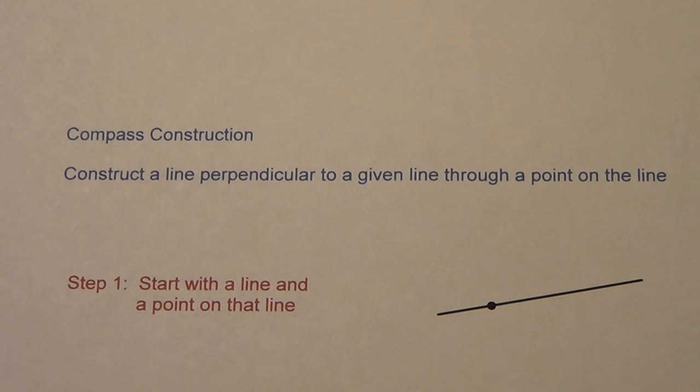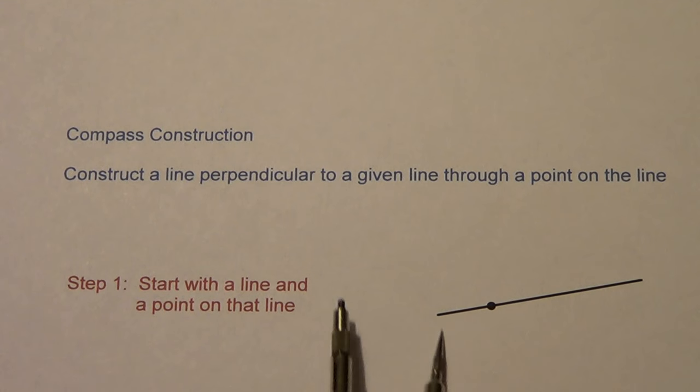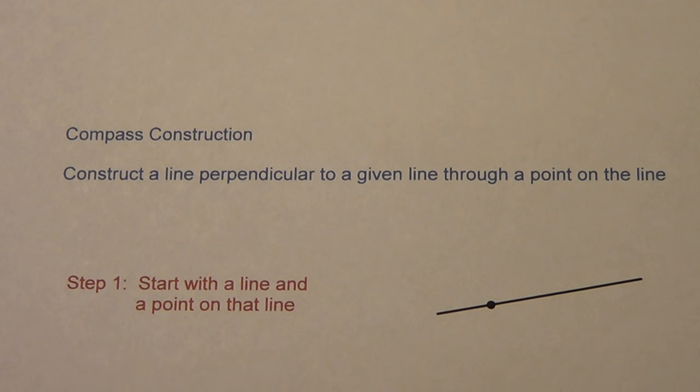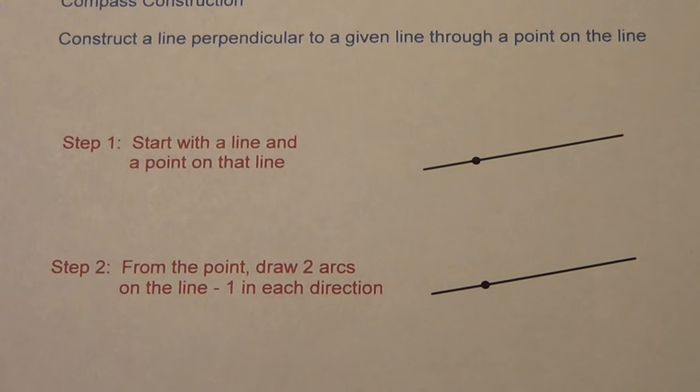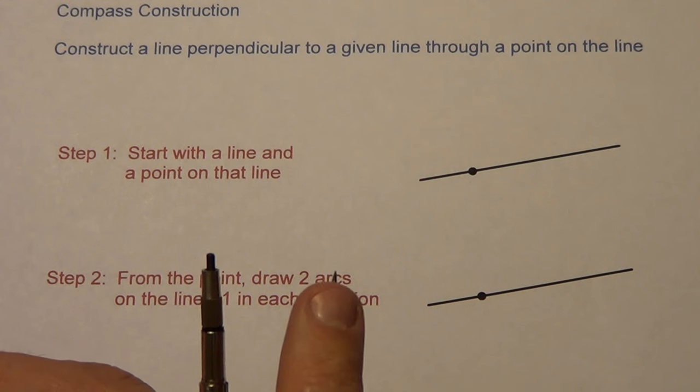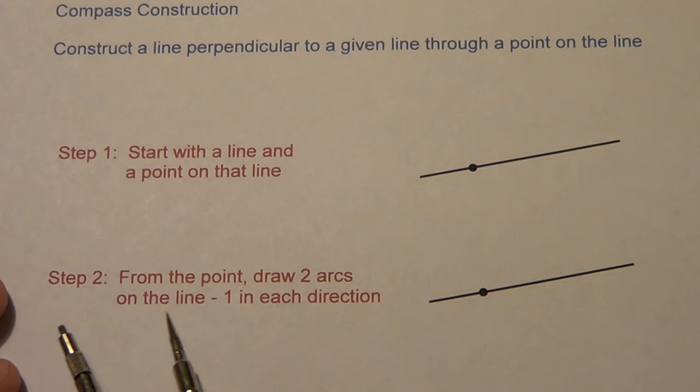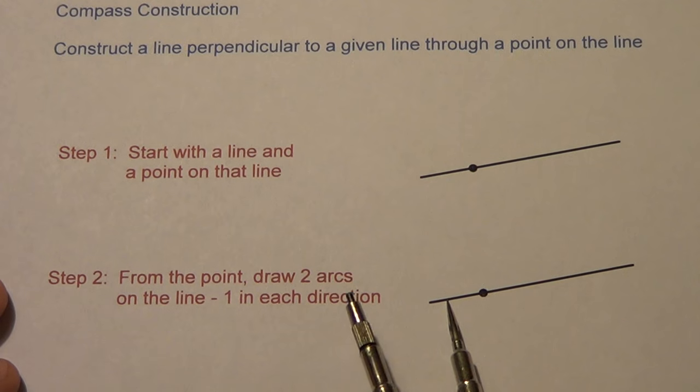Step 2. Remember, pause the video when necessary so you can get this copied down. Make sure you jot the notes down and do the actual compass work with me. From the point, we're going to put our pivot point—remember, our pivot point is a sharp point—right on the point. We're going to draw two arcs that are on the line, one in each direction.